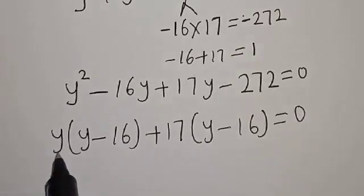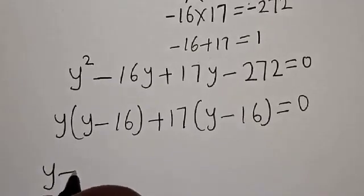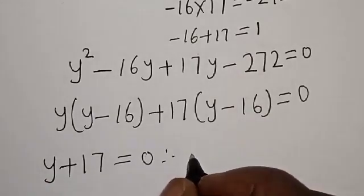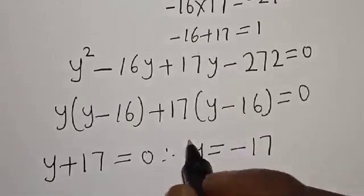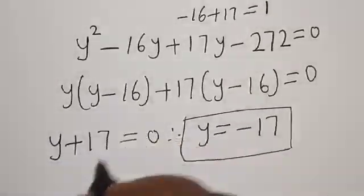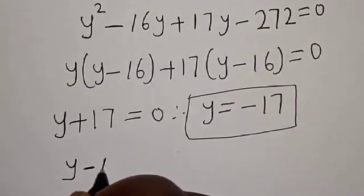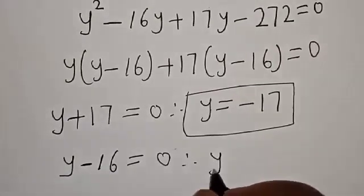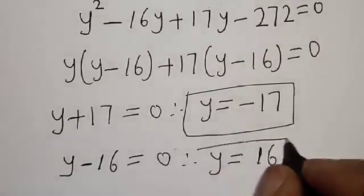We have the common factor y minus 16 appearing in both terms, giving us y plus 17 times y minus 16 equals zero. Therefore y plus 17 equals zero, so y equals negative 17 — that is the first value of y. Also, y minus 16 equals zero, so y equals 16 — that is the second solution for y.